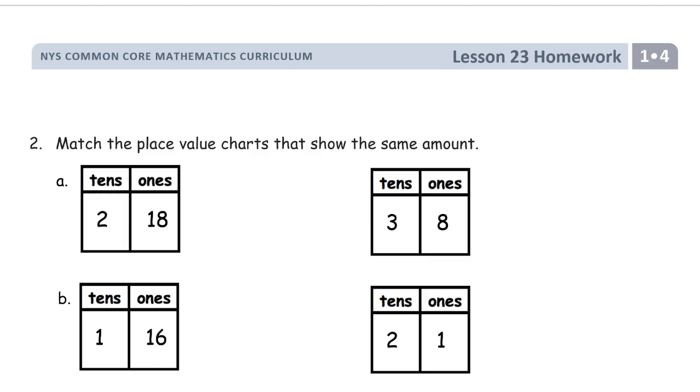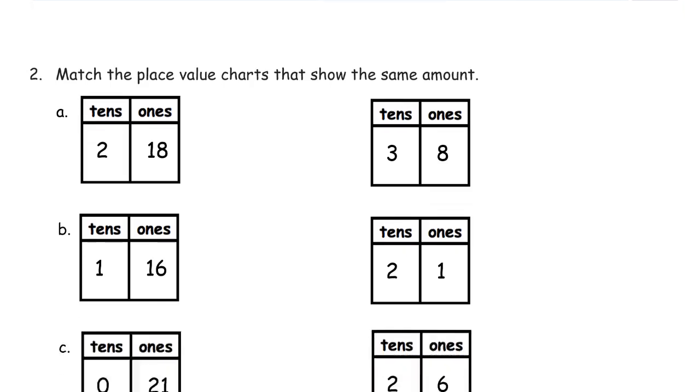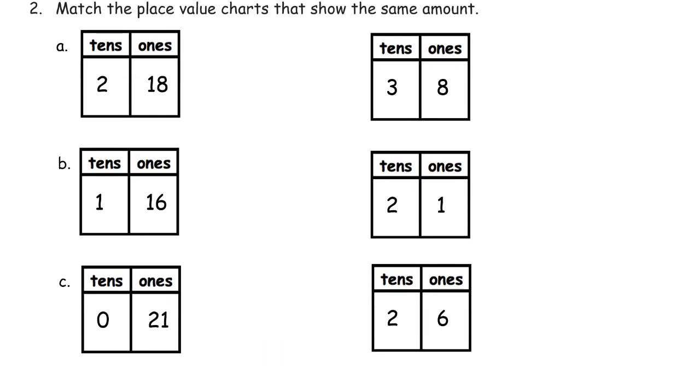And now match the place value charts that show the same amount. It's kind of the same thing we're looking at, but they're in place value boxes now instead of written unit form. This is easier. Here we just have three 10s, eight 1s and we can see it as 38. And over here, two 10s and one 1, we can see it as 21 and we can see that's 26. It's harder to do with these numbers over here.